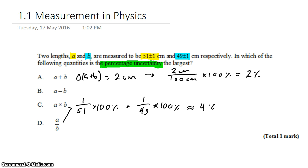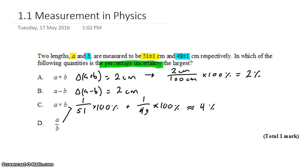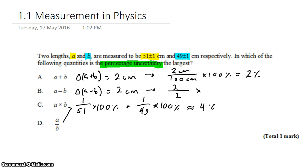It also has to be B because whenever you're doing subtraction, there's this tendency for uncertainties to explode in size. The uncertainty for A minus B is still 2 centimeters — you don't subtract 1 from 1 and get 0; you add 1 to 1 and get 2. But to turn it into a percent, you take that 2 and divide it by A minus B. 51 minus 49 is 2. Multiply by 100%, and you get 100% uncertainty — by far the largest.